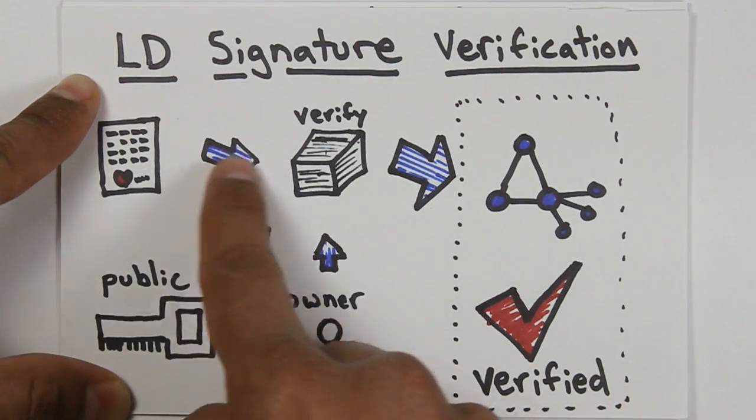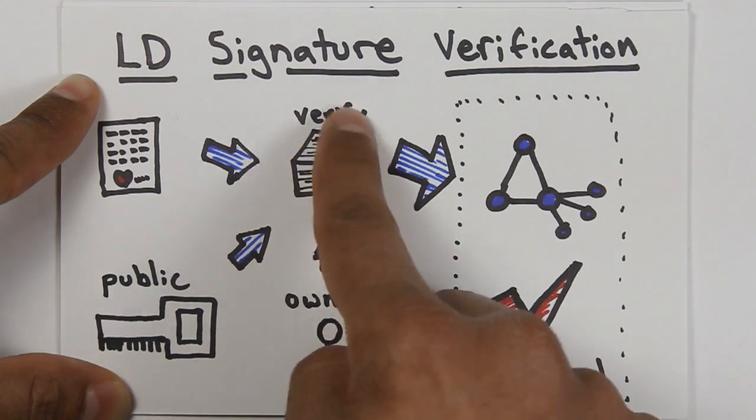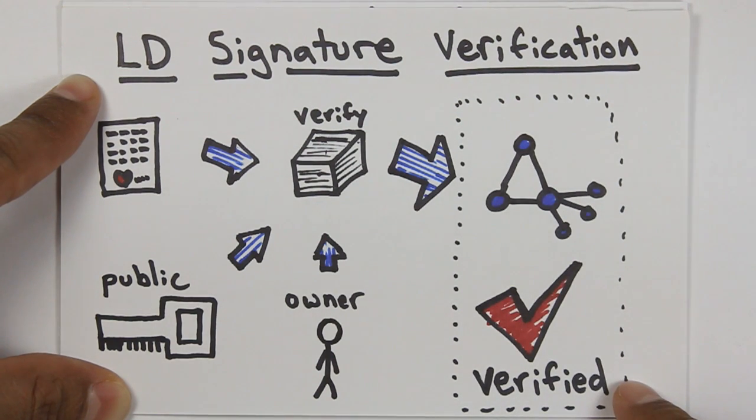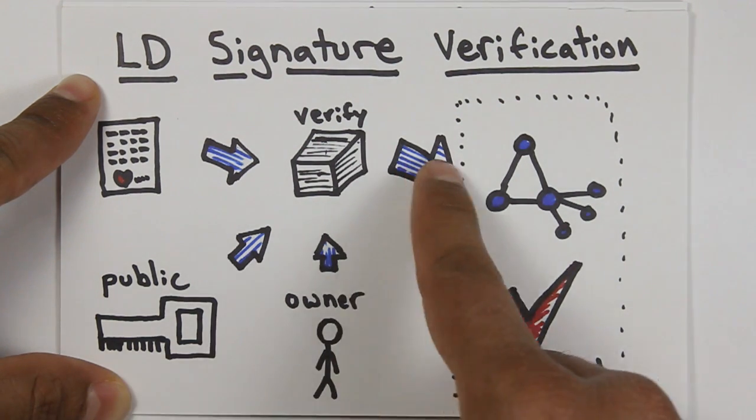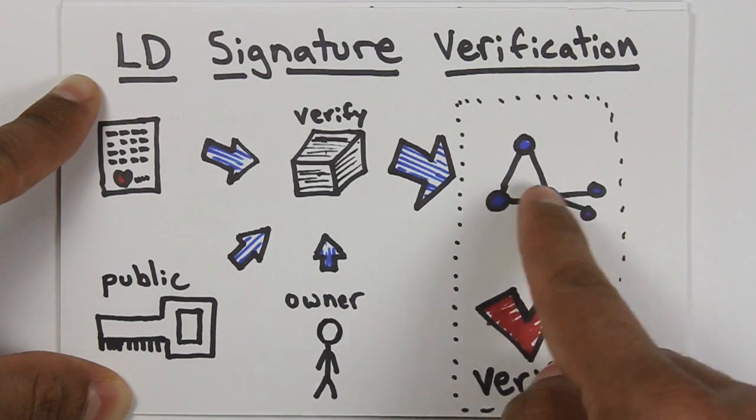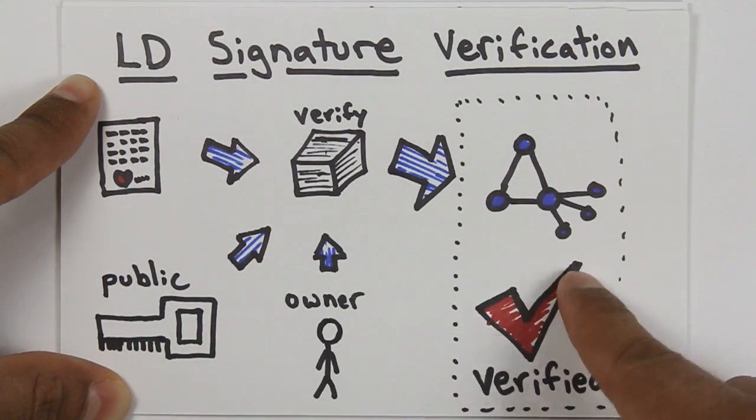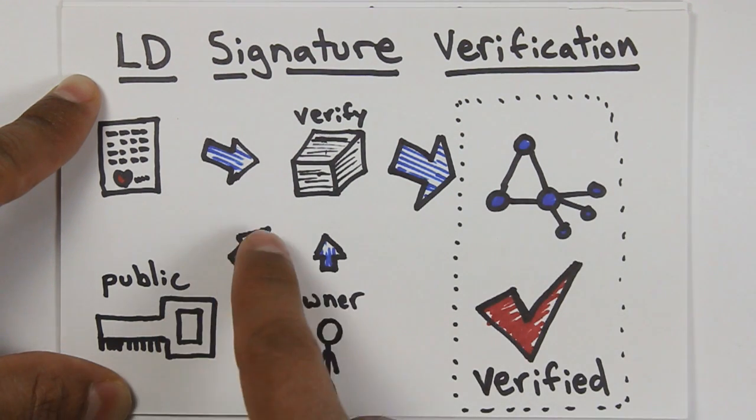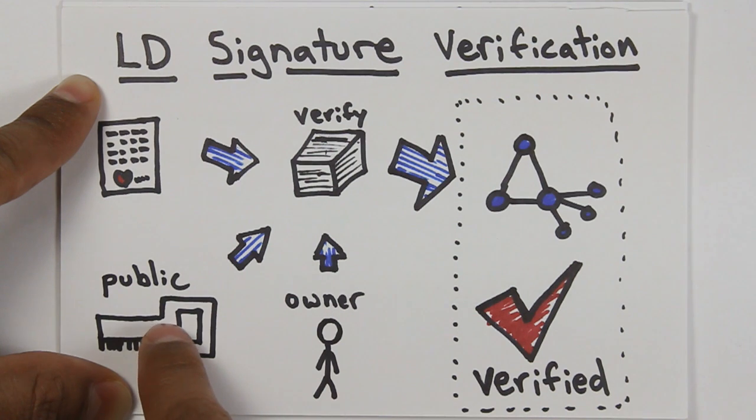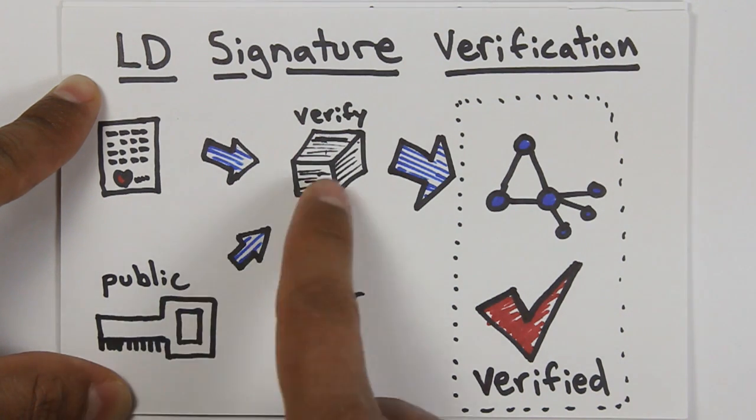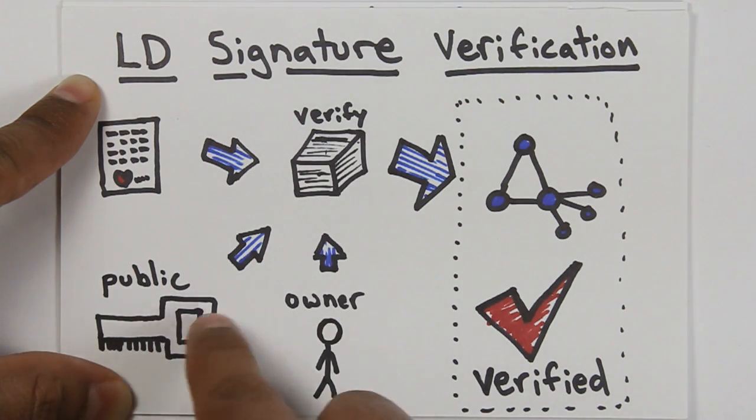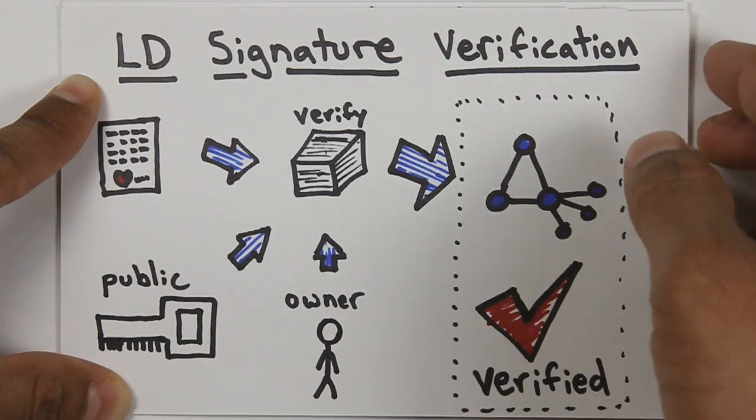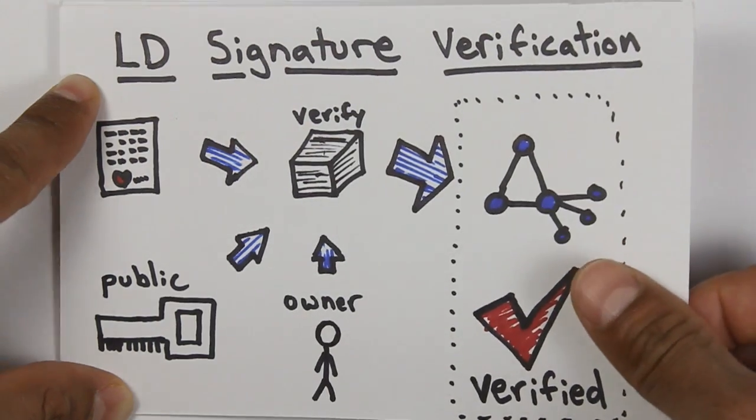Once it has those three pieces of information, the verification algorithm can do some mathematical crunching and come out with a verified or not verified result. In this case, it comes out with the same graph of information that was sent there, and it says that it's verified because the byte stream was verified. Now the more astute observers will notice that we never really said how the machine figures out where the public key or the owner comes from. We just assume that it has access to it. This is where some of the linked data stuff comes in.